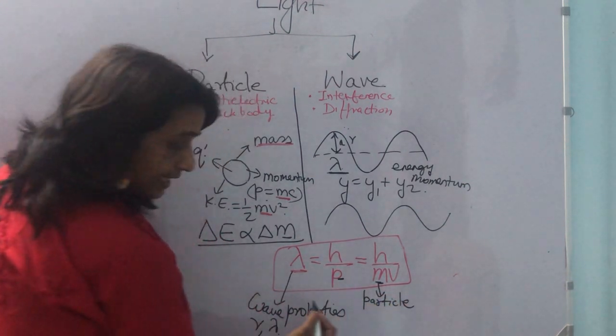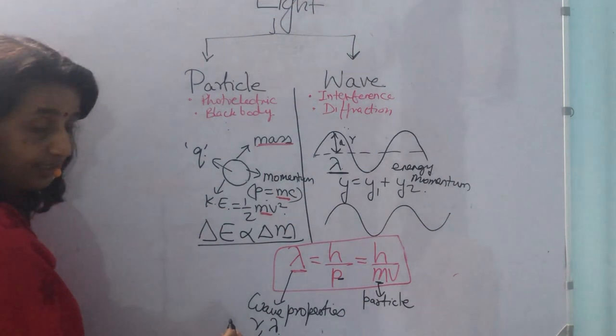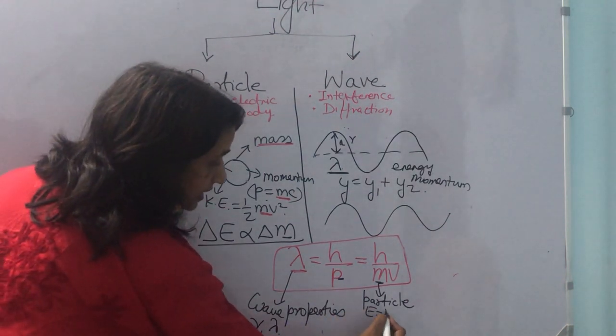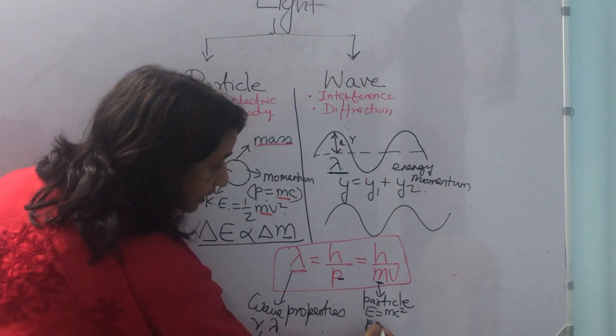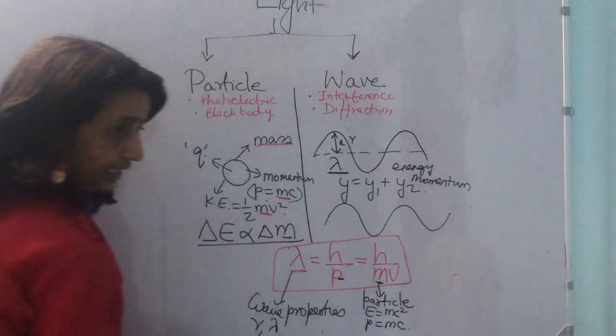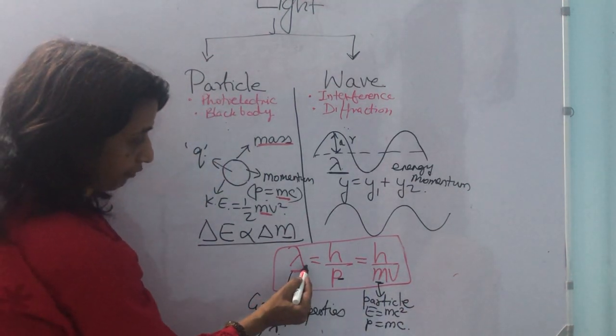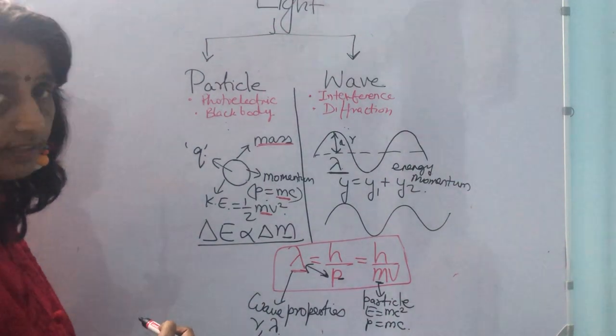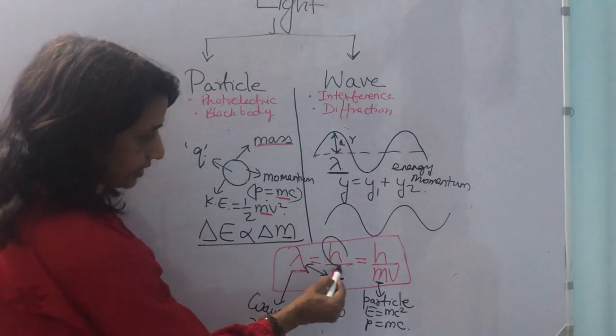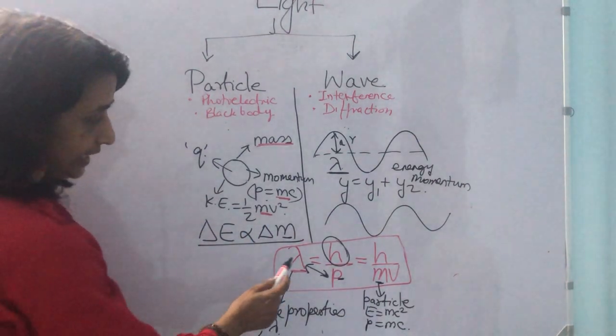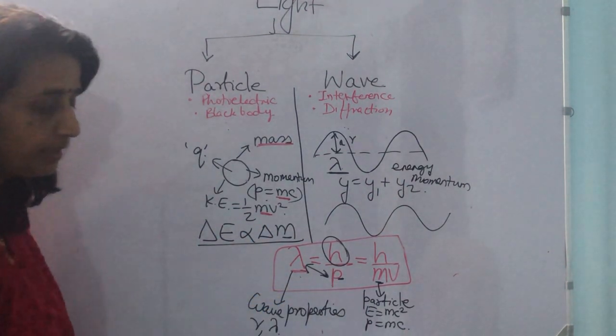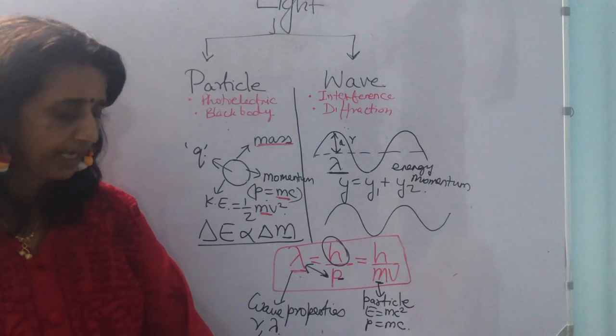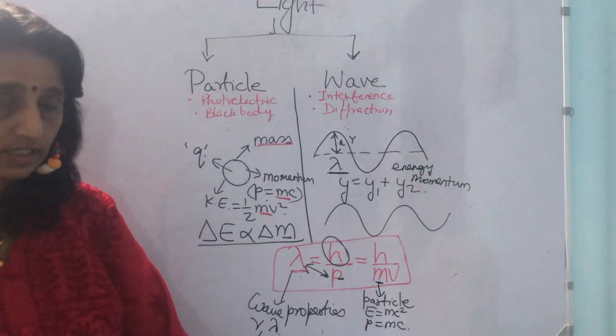Particle aspects in the sense, mass, energy, E equals mc squared, momentum, P equals mc. Both have been combined or bridged together with the help of Planck's constant. And this is the famous de Broglie expression. Planck's constant is a universal constant. Its value is 6.625 times 10 to the power of minus 34 joules per second.